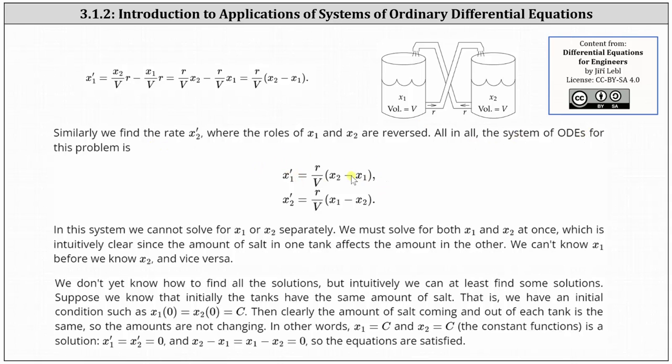And the second equation, the rate of change of the salt in tank two given by x2 prime is equal to r divided by V times difference of x1 and x2. Notice the only difference is x1 and x2 are reversed in the second equation.